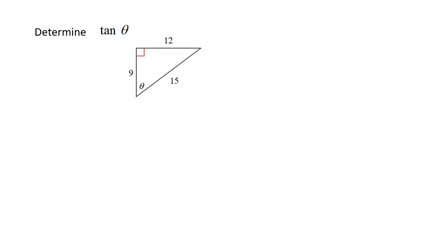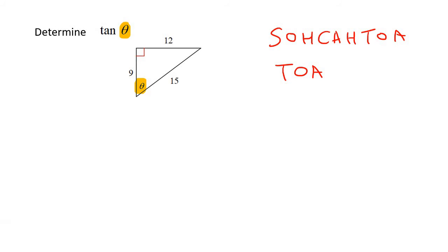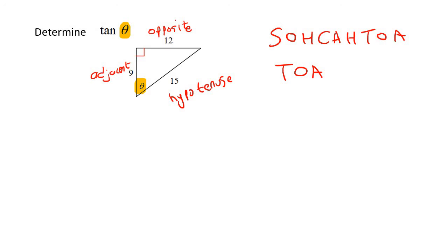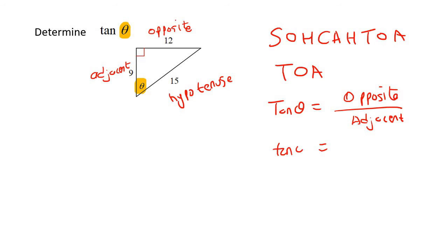This one is asking us for tan. So let's write SOHCAHTOA — we just want the T-O-A part. Let's label our triangle. Find the theta angle. The side opposite the 90 is called the hypotenuse. The side opposite the angle you're looking at is called the opposite. The other side is the adjacent. So tan theta is equal to opposite over adjacent, which is 12 over 9. Simplify that and you get 4 over 3.